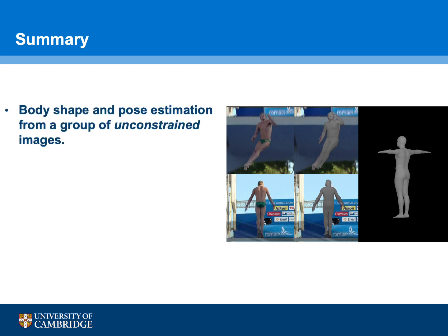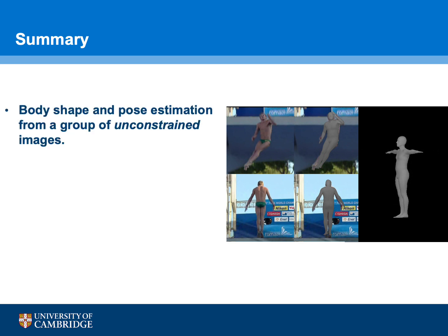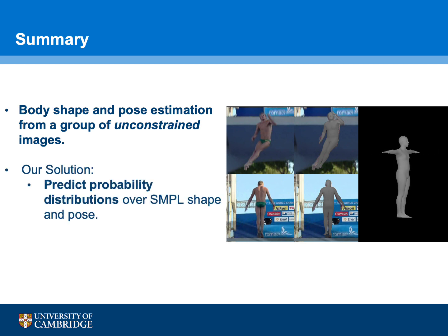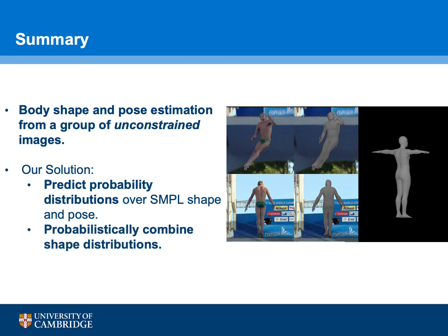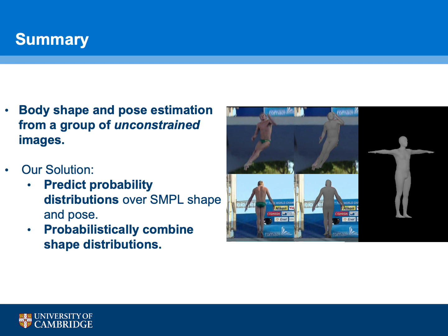In summary, we aim to predict body shape and pose from a group of unconstrained images of the same human subject. Our method predicts a probability distribution over body shape and pose parameters, conditioned on the input images. Body shape distributions from each image are probabilistically combined to yield a final consistent shape estimate, which leverages multi-image shape information for greater accuracy.